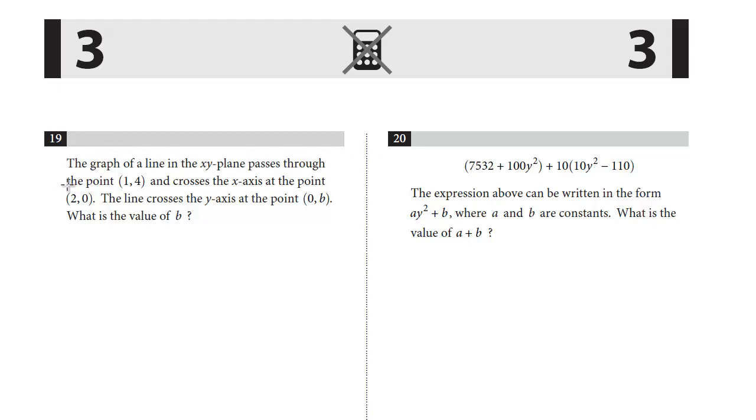Problem 19: The graph of a line in the xy plane passes through the point (1,4) and crosses the x-axis at the point (2,0). The line crosses the y-axis at the point (0,b). What's the value of b?